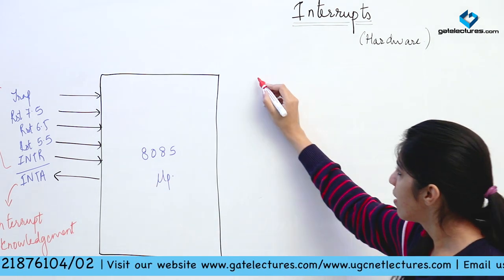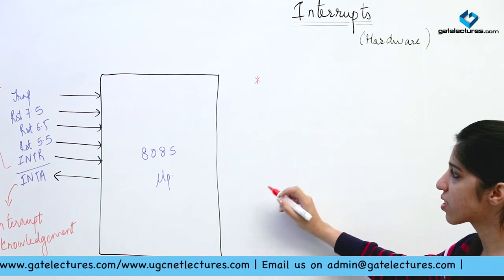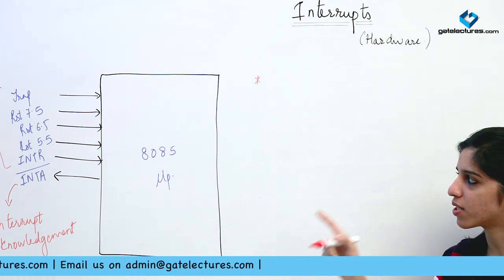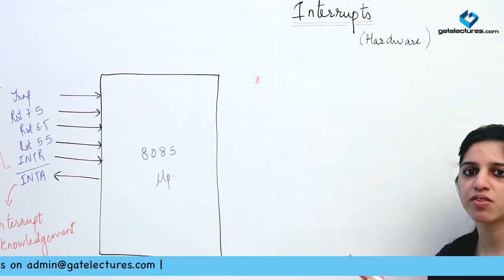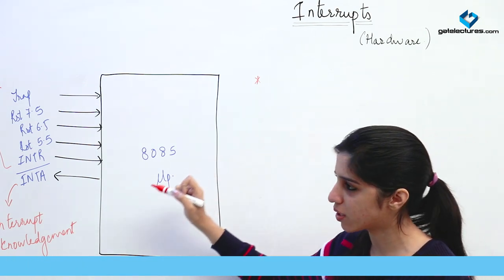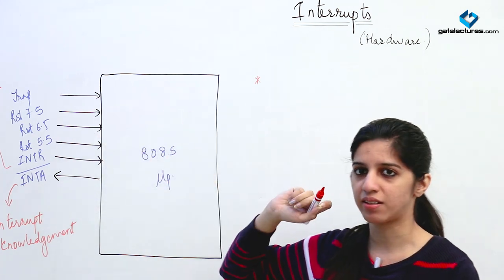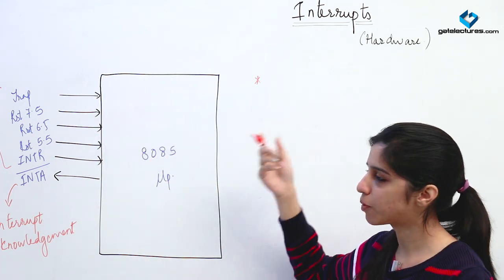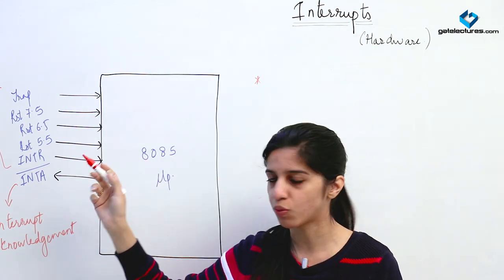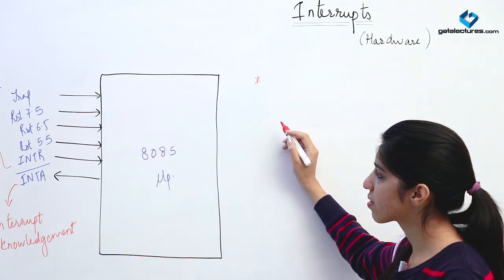The instruction that is being currently executed is never left in between. Whenever you raise an interrupt, the currently executing instruction is never left in between — the microprocessor will always complete the currently executing instruction first. After that it is going to service the interrupt. Servicing the interrupt means routing to the address which is already known for these interrupts.